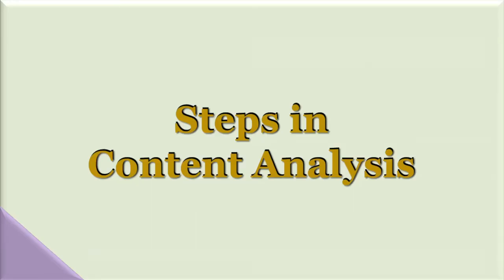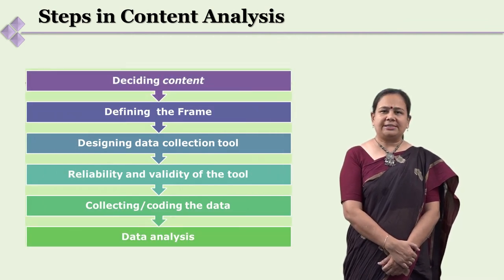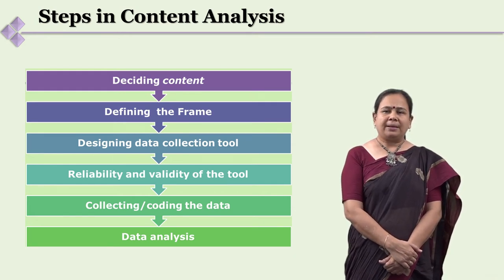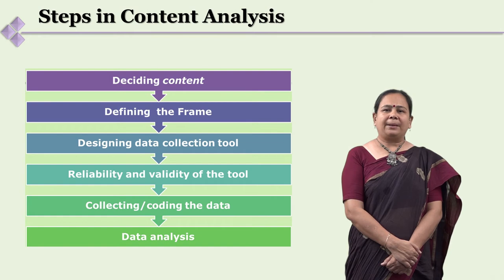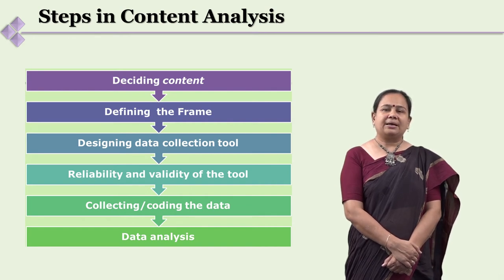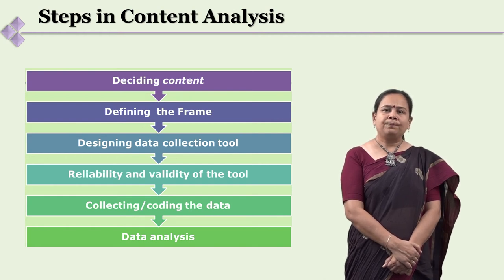The first choice after formulating your research problem is deciding the content. Once you have decided your data, the next step is deciding a frame. As a researcher, we want to be objective, unbiased, and able to generalize our findings — so we can't examine just any content; it has to be framed in context and have logical sampling so that findings are generalizable. Once the frame is decided, you construct your data collection tool and then examine its reliability and validity.